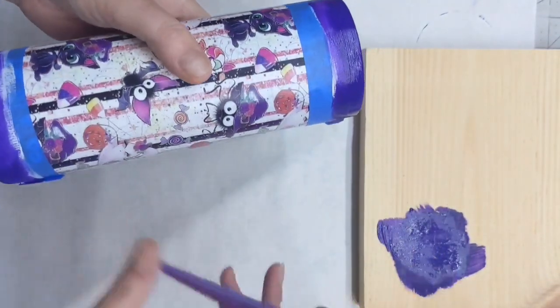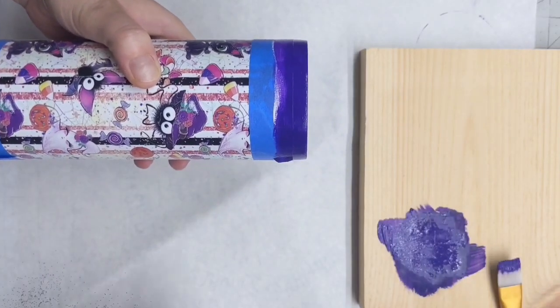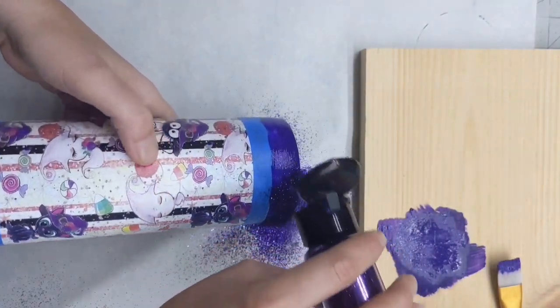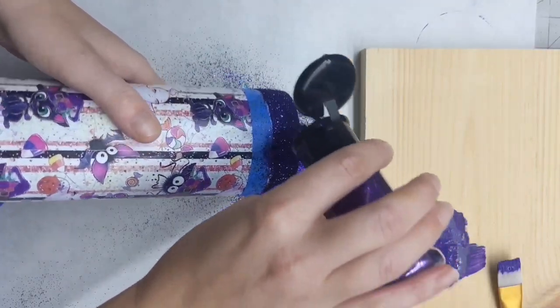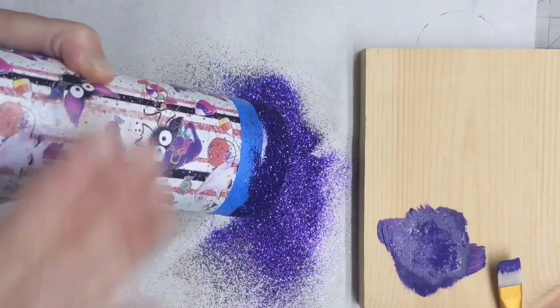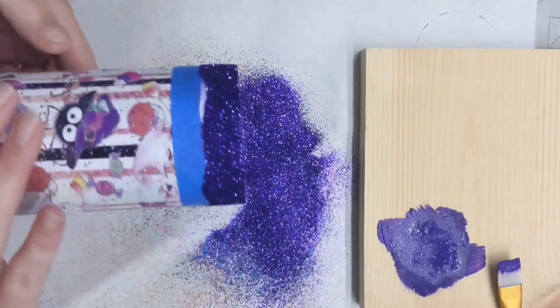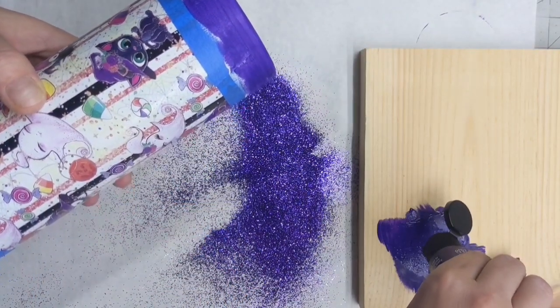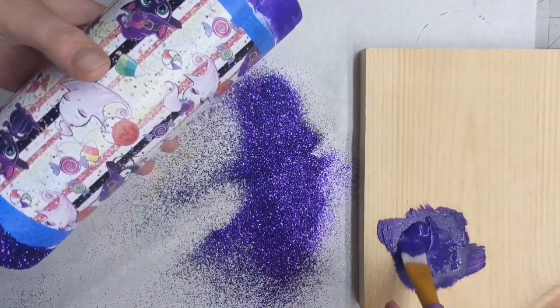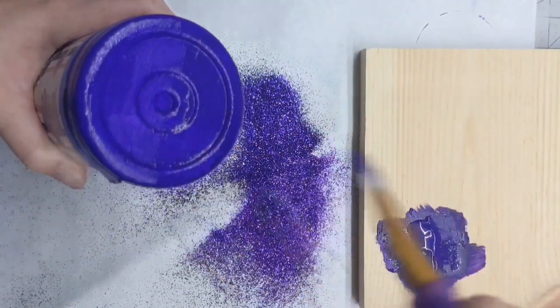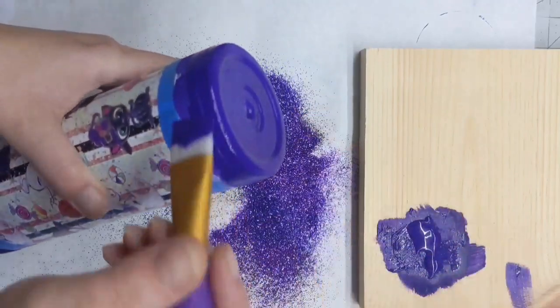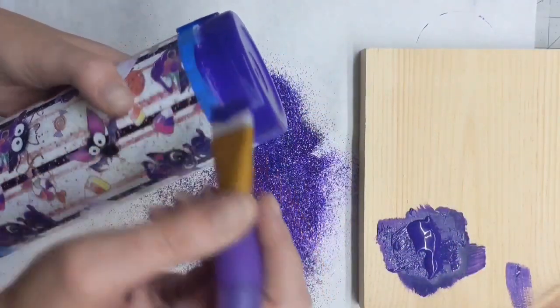you don't want it dripping but you do want a nice thick coat. I immediately applied this purple glitter right over the acrylic paint. The acrylic paint is going to be thick enough and sticky enough that your glitter is going to stick to it. You won't have to worry about it coming off or anything like that. Paint your acrylic paint and then immediately apply your glitter right over that.